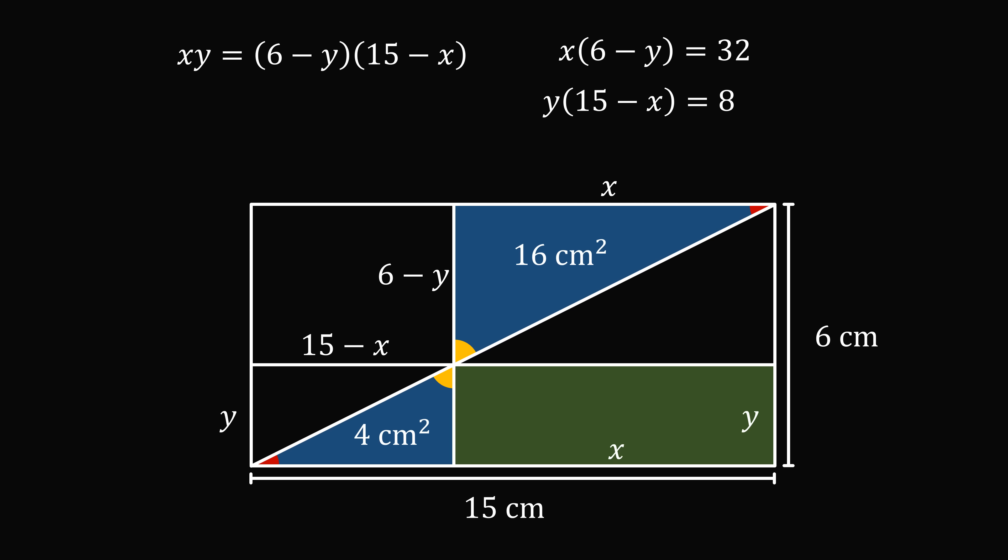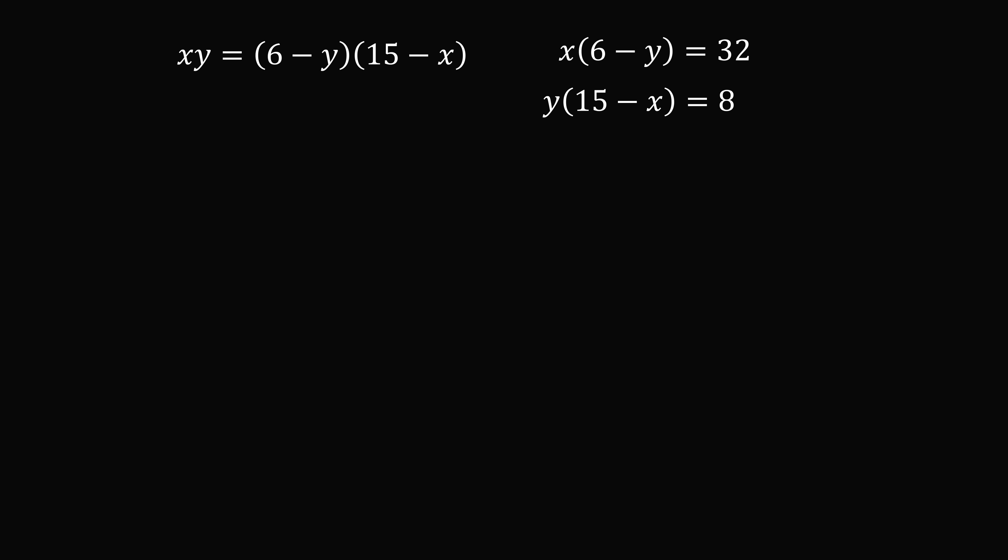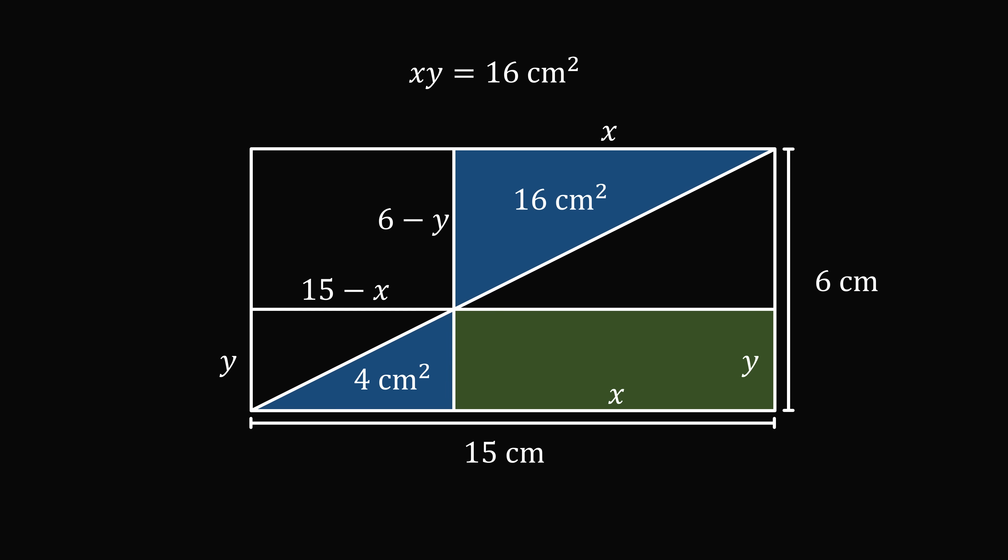So now let's just focus on the equations. Let's multiply the two equations on the right hand side. We get xy multiplied by 6 minus y multiplied by 15 minus x is equal to 32 times 8. But we know that 6 minus y multiplied by 15 minus x is equal to xy. So we can substitute in xy. We now have the square of xy is equal to 256. Taking just the positive value, we get xy is equal to 16 square centimeters. But xy was exactly what the area of the rectangle is supposed to be. So we've come up with a different answer.